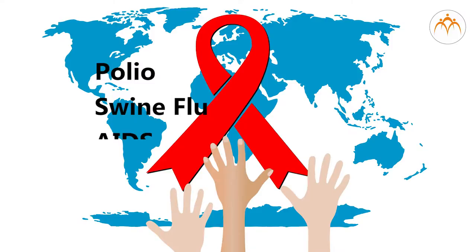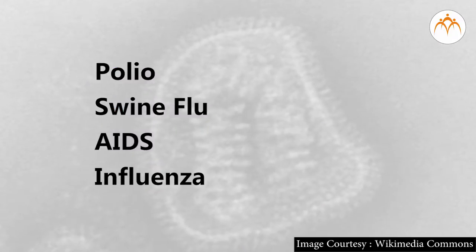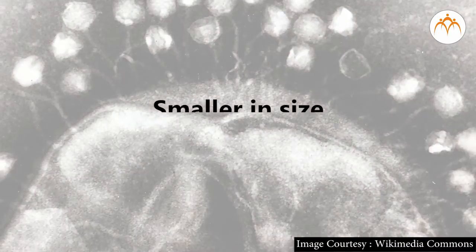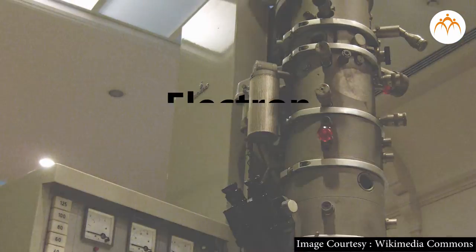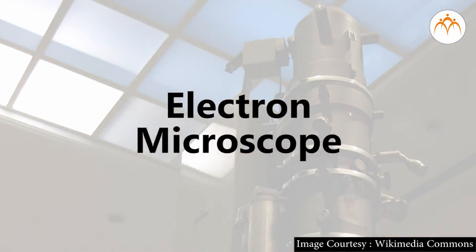Viruses — students, you must have heard of diseases like polio, swine flu, AIDS, and influenza. Do you know how they are caused? These are caused by viruses. Viruses are very small in size — they are even smaller than bacteria. We need an electron microscope to see them. They are inactive in nature and become active only inside living cells.